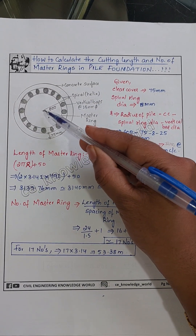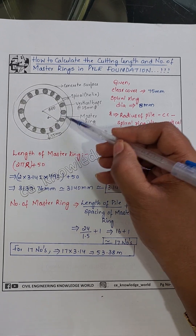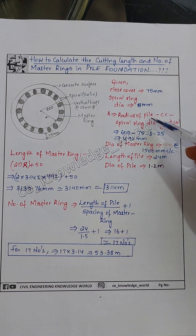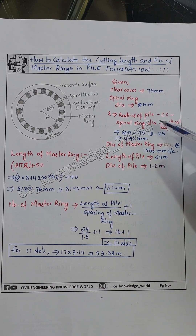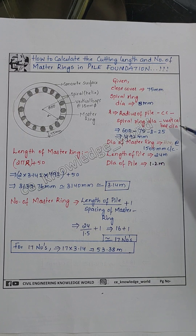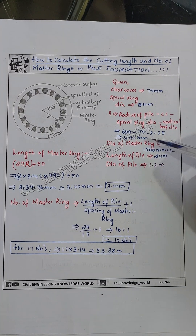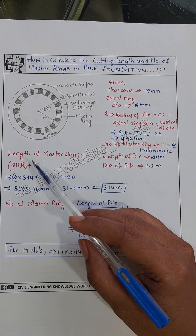Now we have to calculate the small radius r, which is: radius of pile minus clear cover minus spiral ring diameter minus vertical bar diameter. That gives us: 600 − 75 − 8 − 25 = 492 mm.